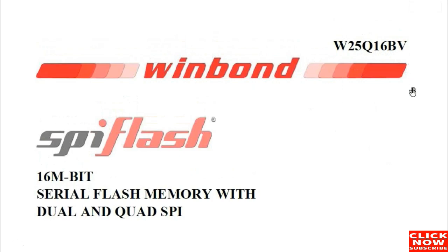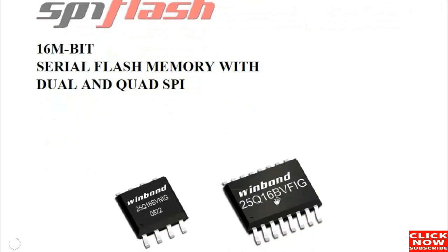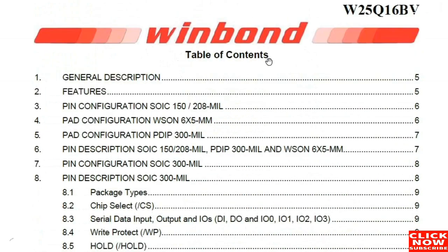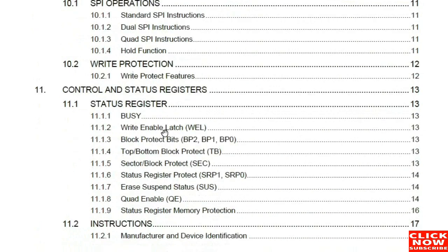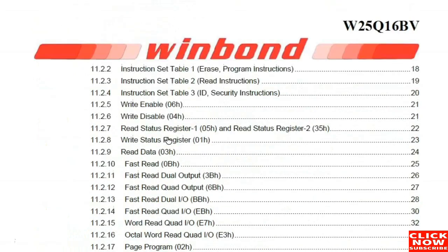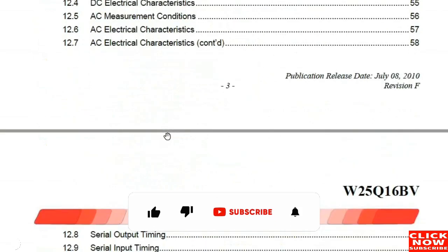We now have the PDF file downloaded. As you can see, this is a 16 megabit serial flash memory. Here is the table of contents where you can look for anything you want to read about the BIOS chip, including the pin configuration, characteristics, and more.